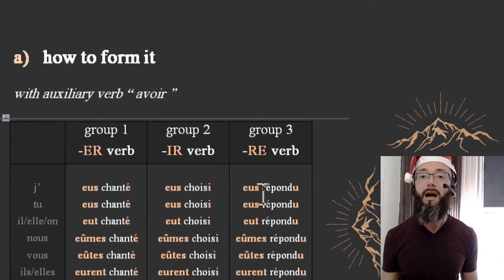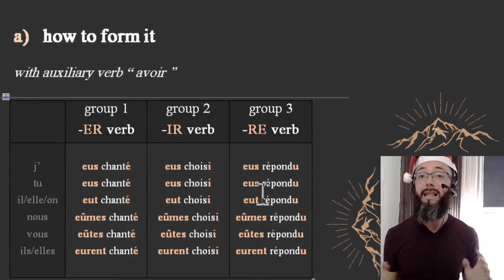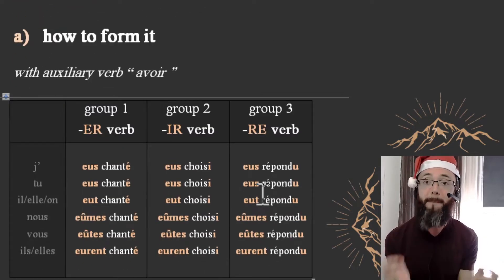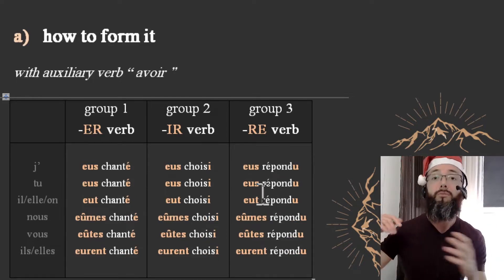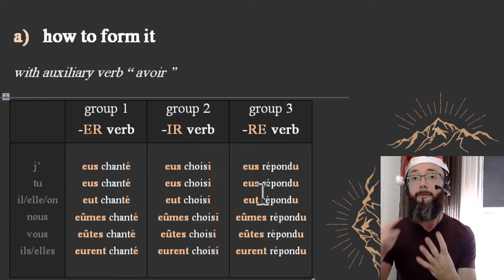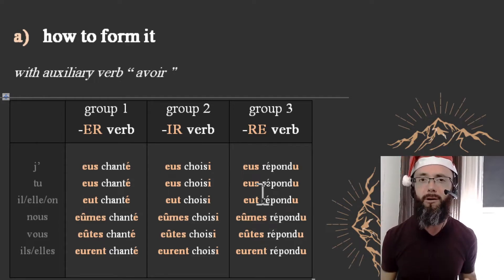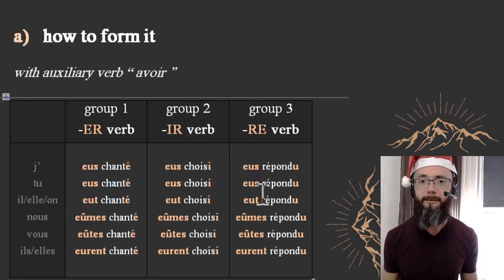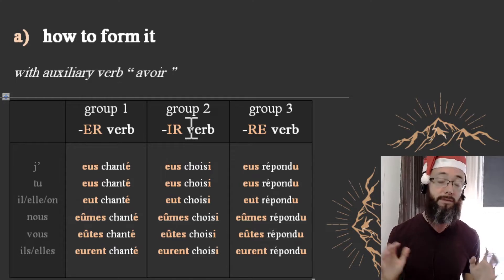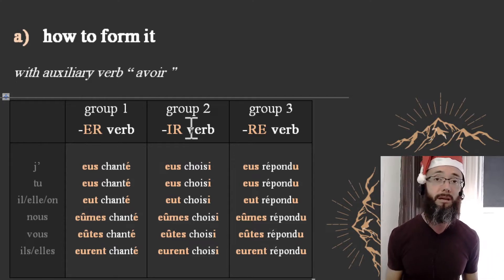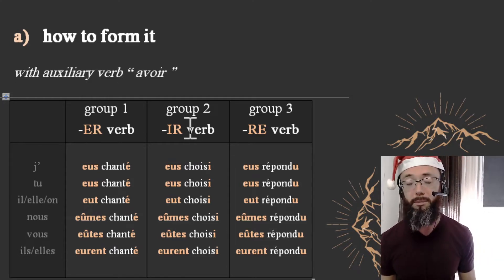How do we form l'indicatif passé antérieur? It's a compound tense, just like le passé composé, le plus-que-parfait, le futur antérieur. There are four compound tenses in the indicative mode in French, and this is one of the four — probably the least known. Not a lot of people use that tense, even today, or especially today, because in the past it was more common. But now that tense is in danger.